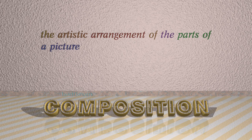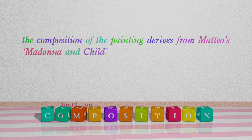Number 7: Composition. Which means the artistic arrangement of the parts of a picture. For example: The composition of the painting derives from Mateo's Madonna and Child.